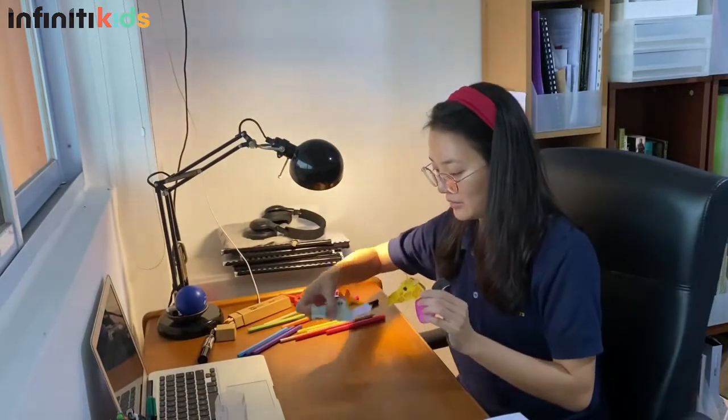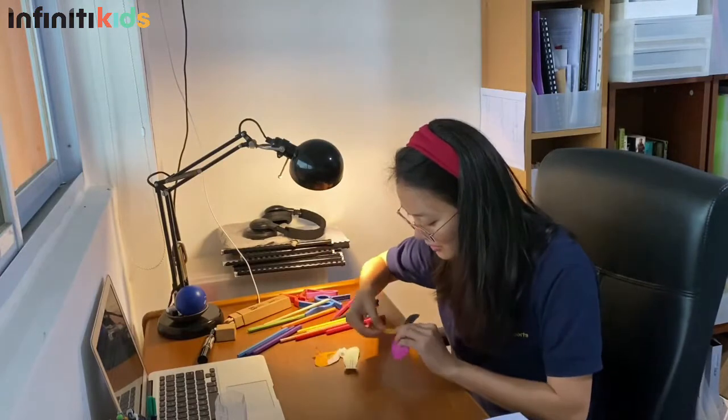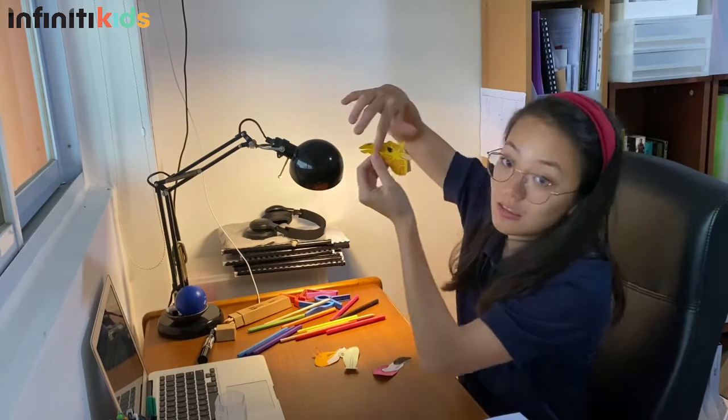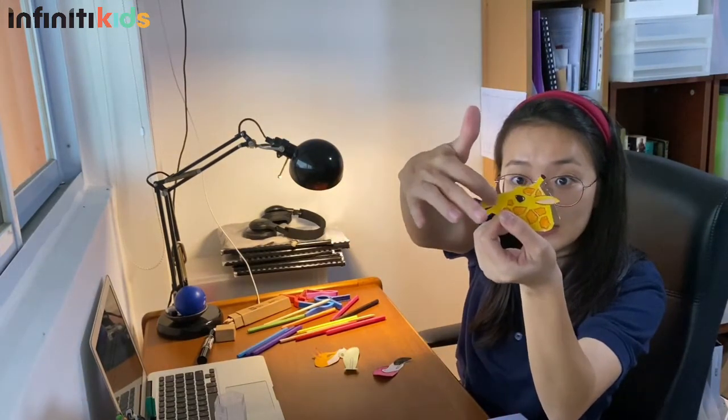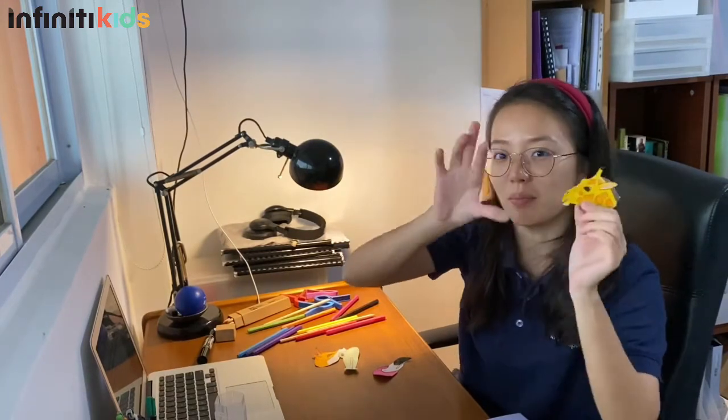Now we've cut out all the heads and next step is to cut out the mouth. Don't cut, like for the giraffe, you can see that the mouth is going this way. Do not cut all the way up like that. You want to cut it so that it looks like a natural mouth opening and closing.